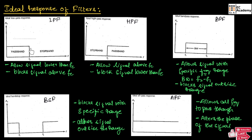It is the same for all filters. Passband is the range of frequencies that are allowed, and stopband is the range of frequencies that are attenuated by the filter. As you can observe in this diagram, there is a sharp transition from passband to stopband.